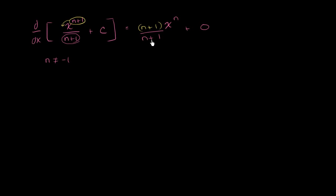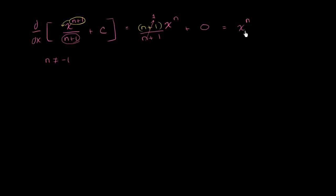Since n is not equal to negative 1, we know this is defined. This n plus 1 over n plus 1 is just 1, and the whole thing simplifies to x to the n. So the derivative of this expression, in very general terms, is equal to x to the n.